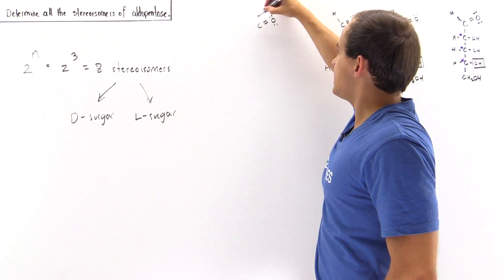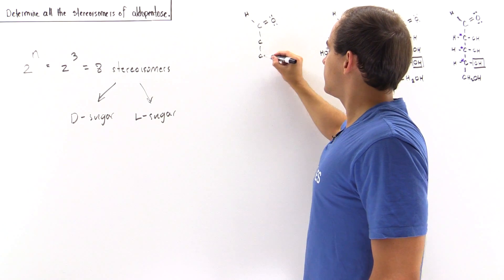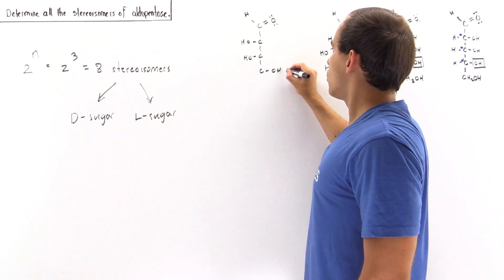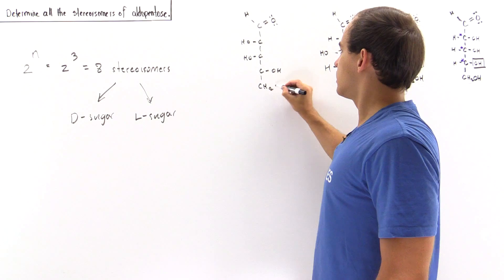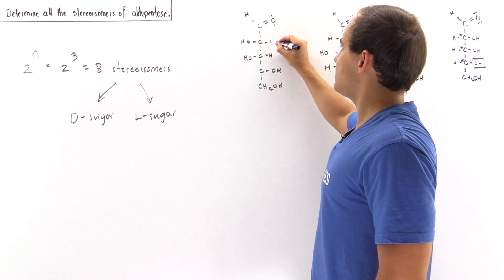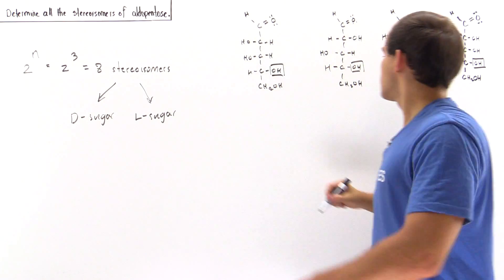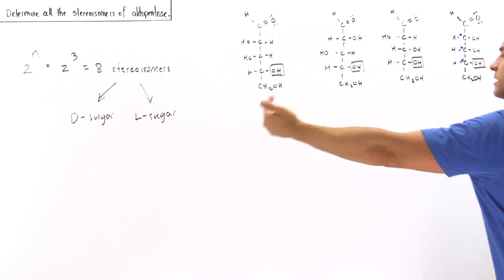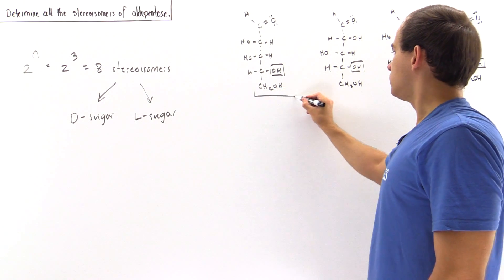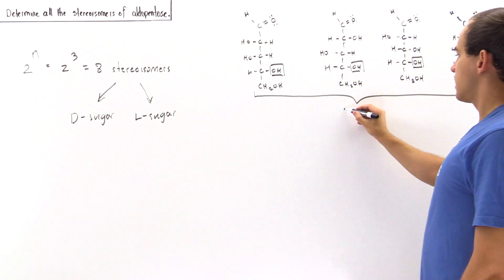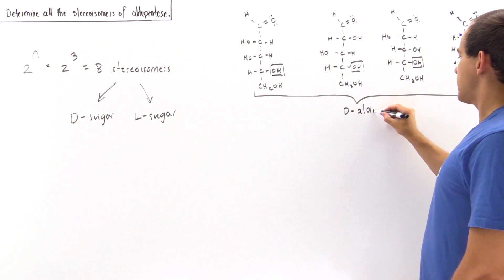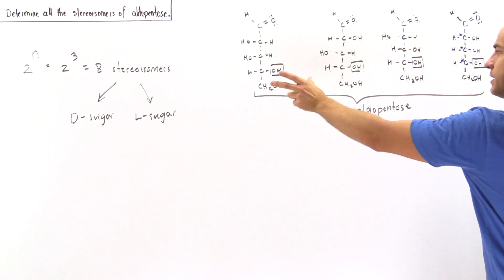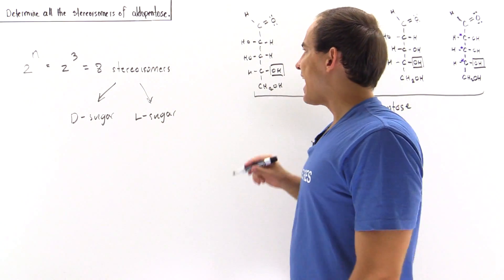The fourth and final D-aldopentose basically contains both of these hydroxyl groups pointing to the left side, while the final OH points to the right side — because we're looking at the D-sugar and not the L-sugar. In all four molecules, this final hydroxyl group attached to the final stereogenic carbon points to the right, so all four are categorized as D-aldopentose. For example, the first one is D-ribose, and each one has its own name.